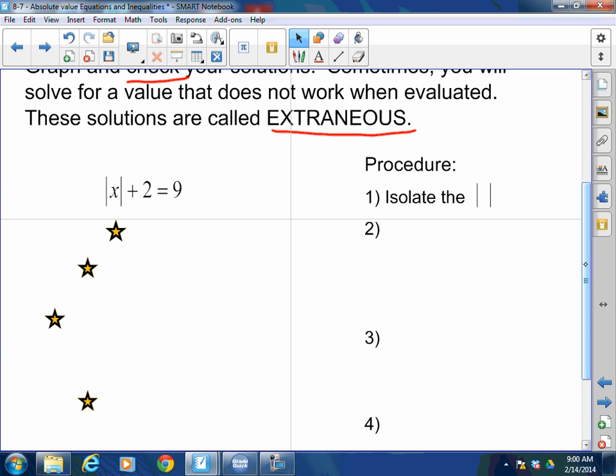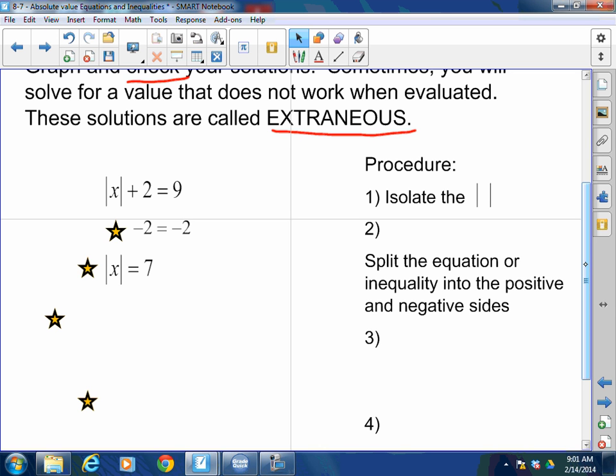So in this case, how do I get that absolute value alone in this particular case? That's exactly right. Subtract 2 to both sides. And once I subtract 2 to both sides, I'm left with the absolute value of x = 7.